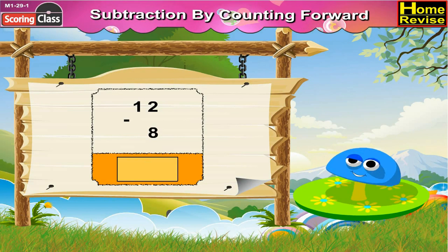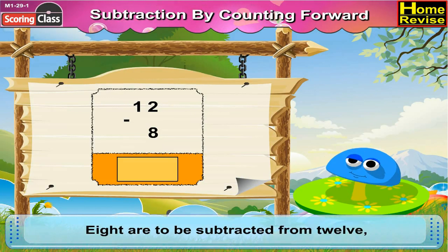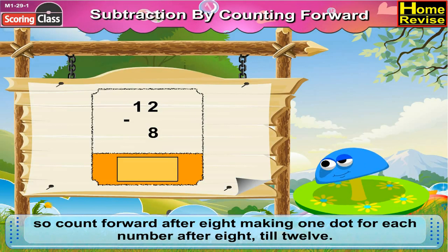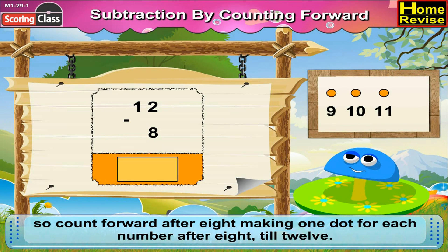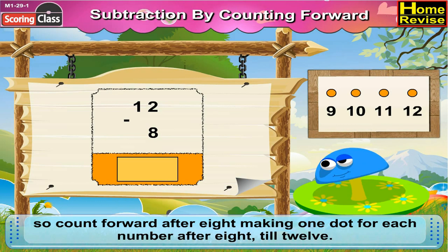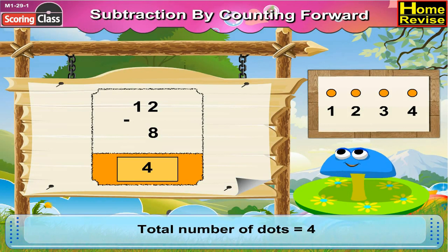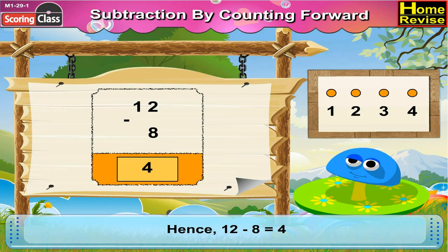12 minus 8 is equal to dash. 8 are to be subtracted from 12. So count forward after 8, making 1 dot for each number after 8 till 12: 9, 10, 11, 12. Count the dots — 1, 2, 3, 4. Total dots are 4. Hence 12 minus 8 is equal to 4.